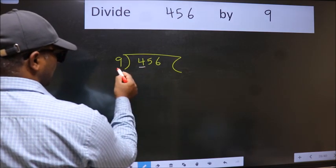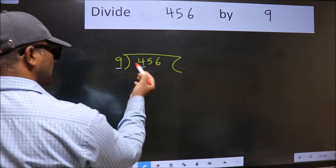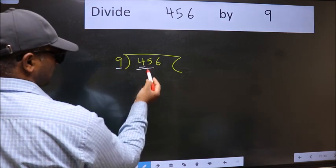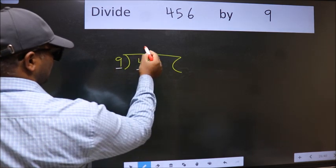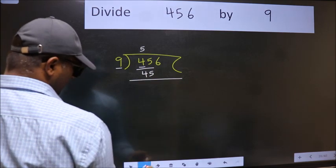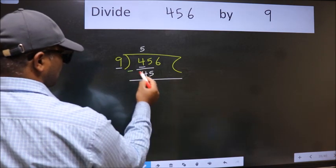456 and here 9. 4 is smaller than 9, so take two numbers, 45. When do we get 45 in 9 table? 9 fives 45. Now we should subtract. We get 0.